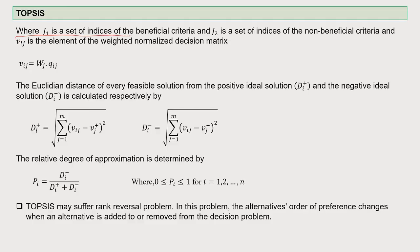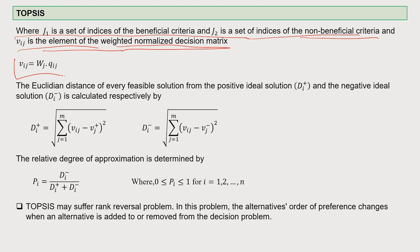Here, J1 is a set of indices of the beneficial criteria — which we discussed in the previous lecture — and J2 is a set of indices of non-beneficial criteria. V_ij is the element of the weighted normalized decision matrix, calculated accordingly. The Euclidean distance of every feasible solution from the positive ideal solution is expressed as D_i+ and from the negative ideal solution as D_i-. These two distances are calculated by their respective formulas.